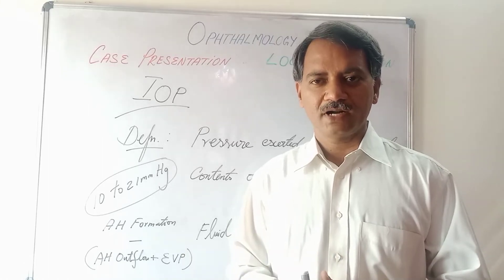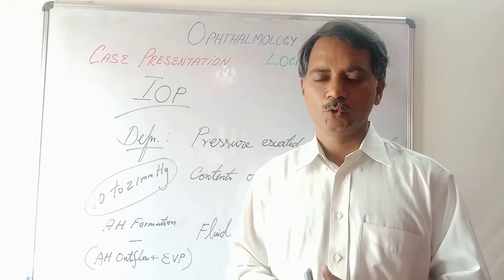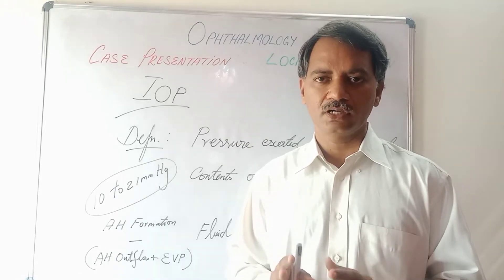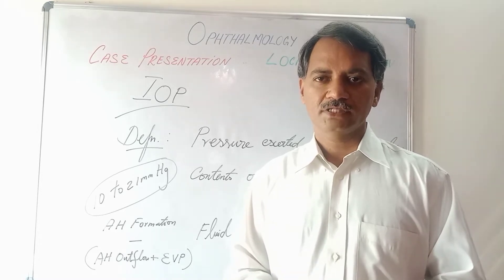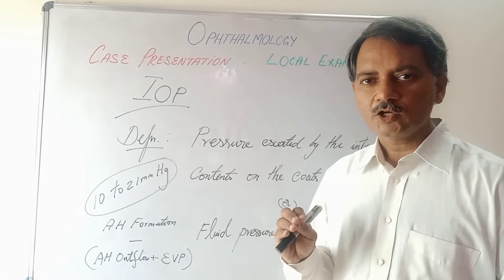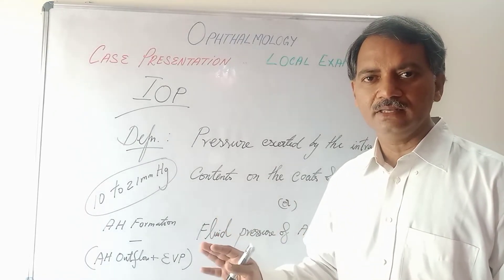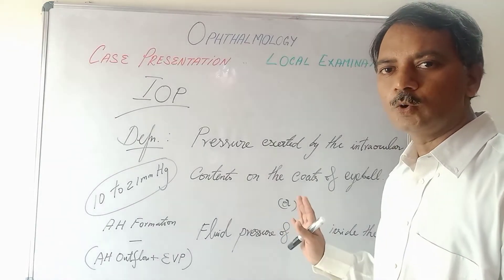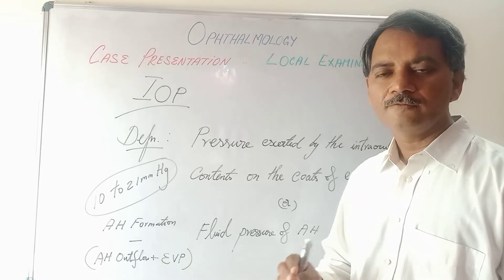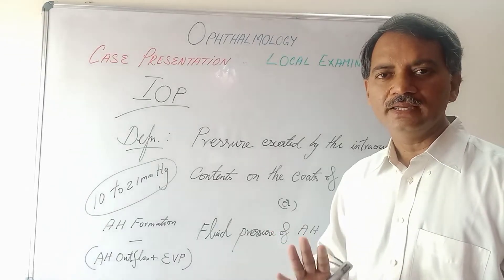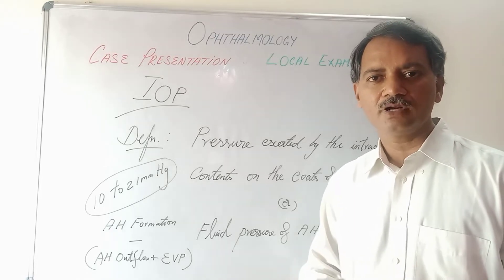Welcome back to Ophthalmology for Undergraduates and Postgraduate Beginners. Today, I am going to talk about intraocular pressure and how to measure it. Intraocular pressure is the pressure exerted by the intraocular contents on the coats of the eyeball, or it is the fluid pressure of the aqueous humor inside the eye.